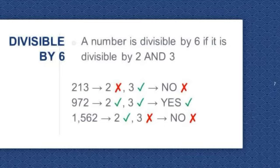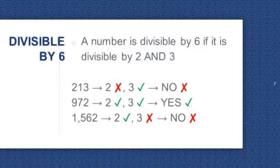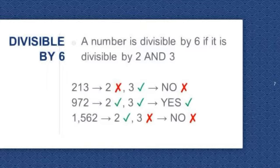Divisible by 6. A number is divisible by 6 if it is divisible by both 2 and 3. Let's try 213. 213 is divisible by 3 but it's not divisible by 2, and according to our rule it should satisfy both rules for 2 and 3, so 213 is not divisible by 6. Next, 972. 972 is divisible by 2 and 3, so 972 is divisible by 6. 1,562 is divisible by 2 but not divisible by 3, so 1,562 is not divisible by 6.